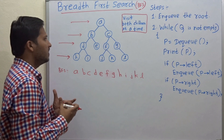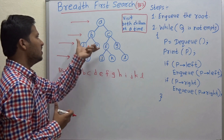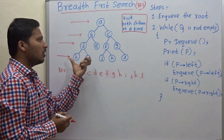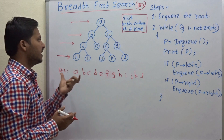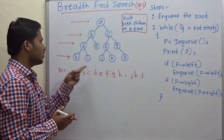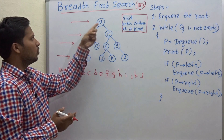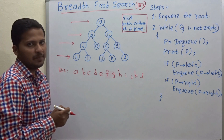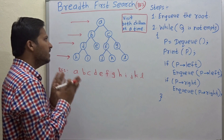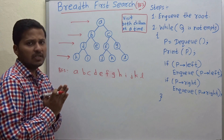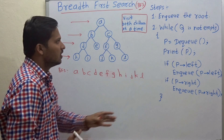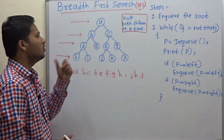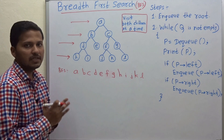Now, how do we find the BFS of any binary tree? For a small binary tree you can determine the BFS just by looking at the levels. But if it is a huge binary tree then you need a program — you need a set of steps. These are the steps for finding out the BFS of any binary tree.